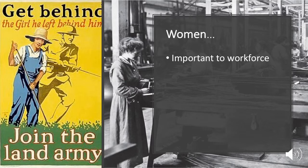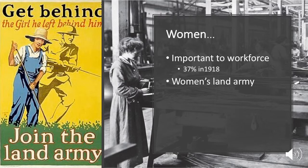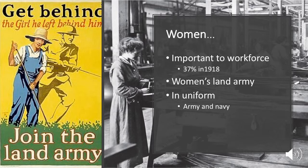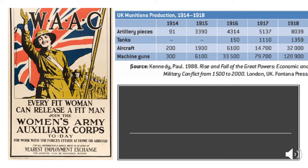Women became an important part of the workforce in Britain. In 1914 they were only about 24% of the working population, and by 1918 it had increased to 37%. They worked in munitions factories, making guns, making bullets, everything. There was also something called the Women's Land Army, whose purpose was to have women take over jobs in agriculture to keep food production up while men were off fighting the war.